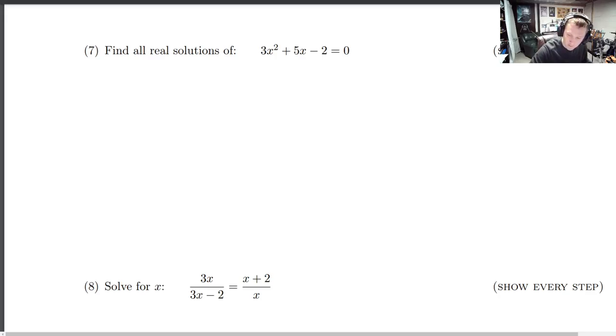And we are back for another question. This one is number 7. Find all real solutions of 3x squared plus 5x minus 2 equals 0. So this is a quadratic, so if you want to use the quadratic formula right off the bat, you're more than welcome to.